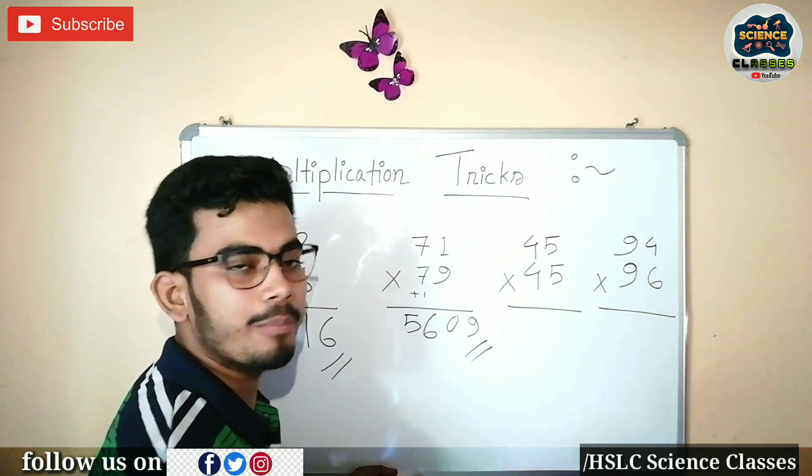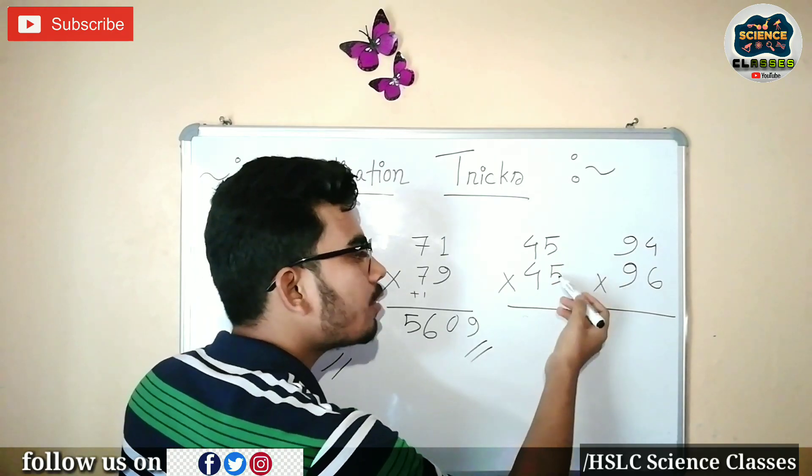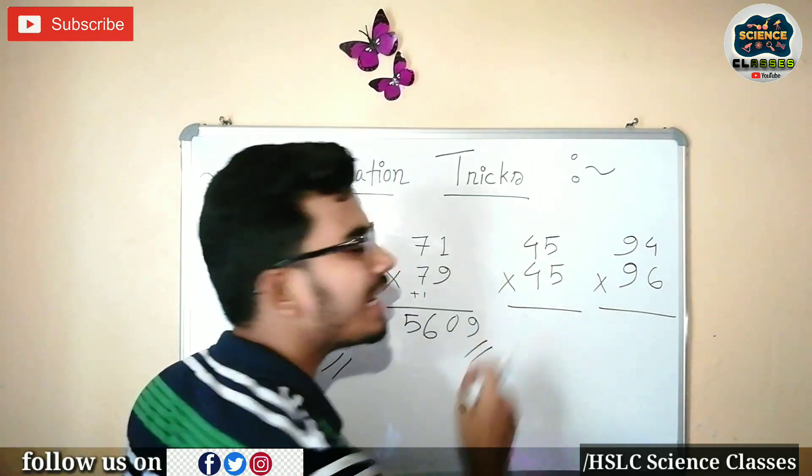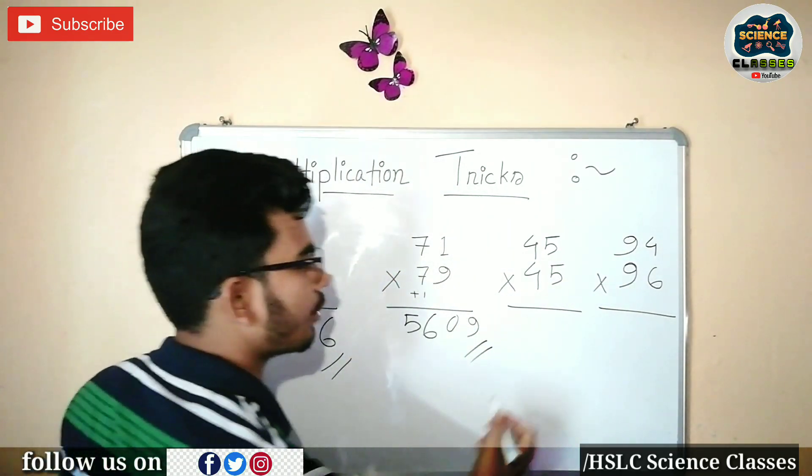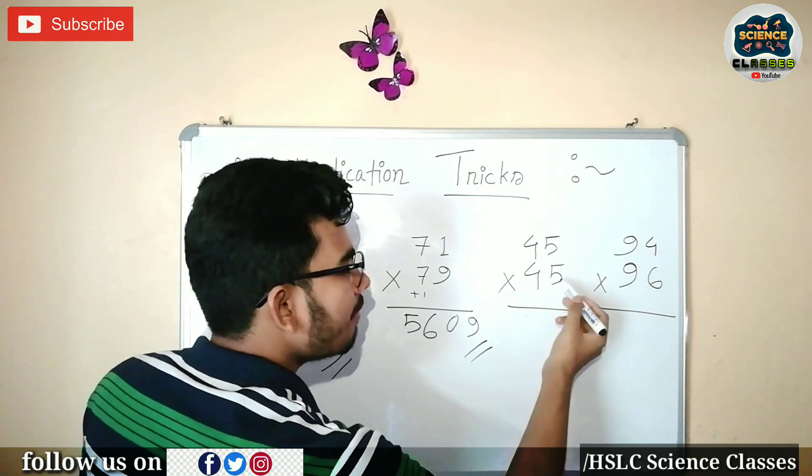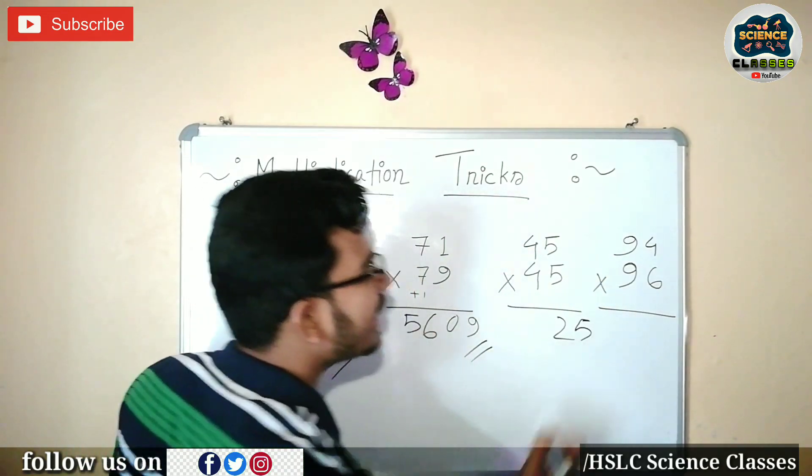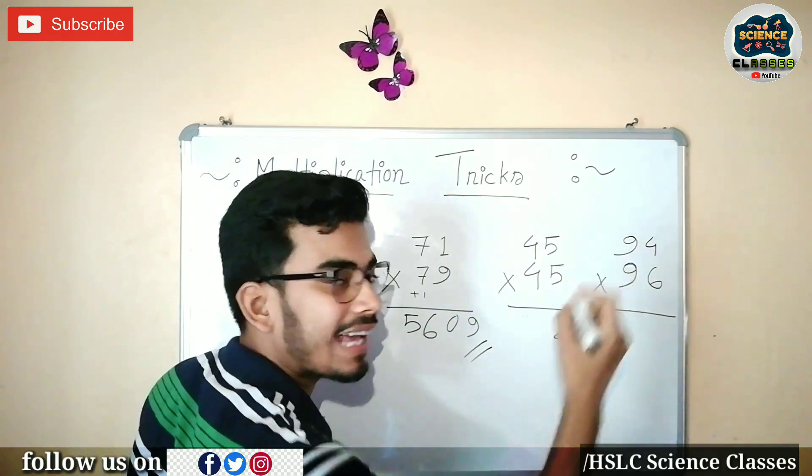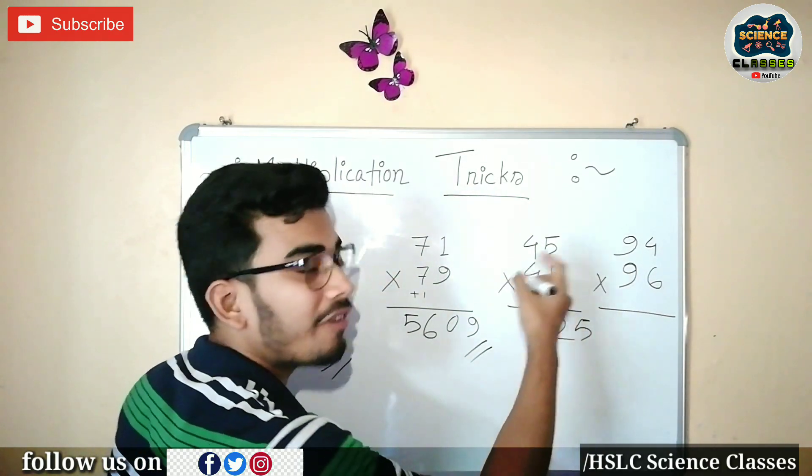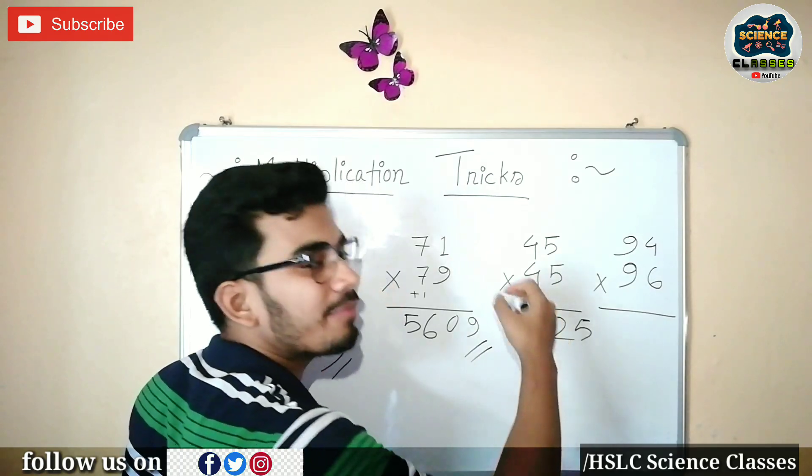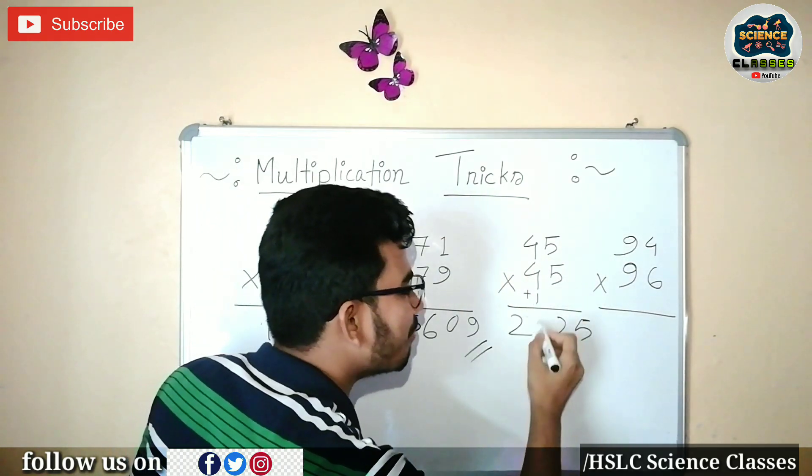This is our next question. The first question is 45 times 45. 5 times 5 is 25. This is the answer: 2025.